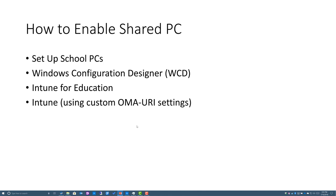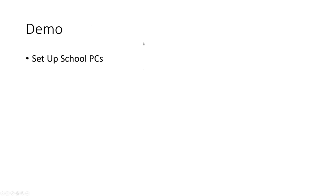So how do we enable Shared PC? There are four ways — five if you count WMI and scripting through PowerShell. The first way is Set Up School PCs. Then we'll look at Windows Configuration Designer, Intune for Education, and finally Intune using custom OMA-URI settings. Let's get into the demo, starting with Set Up School PCs.